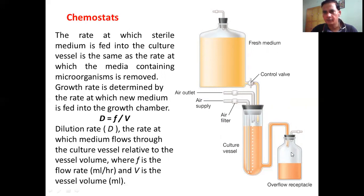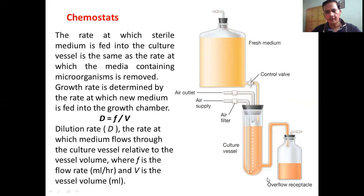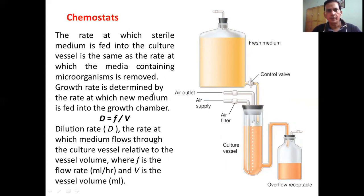As the level in the culture vessel increases, medium is automatically transferred to an overflow receptacle. One can control the flow rate of fresh media using this valve. Fresh media containing fresh nutrients keeps flowing in while old media containing accumulated toxins is removed. The rate at which sterile media is fed into the culture vessel equals the rate at which media containing microorganisms is withdrawn. Growth is determined by the rate at which new medium is fed in: D equals F over V, where D is the dilution rate, F is the flow rate, and V is the vessel volume.